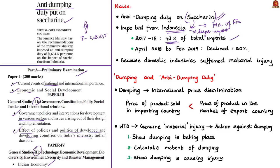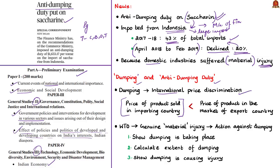This anti-dumping duty was imposed because the domestic industry producing saccharine in India suffered material injury. To understand this, let us know about dumping. Dumping is a situation of international price discrimination where the price of a product sold in the importing country is less than the price in the exporting country. In the simplest cases, one identifies dumping by comparing prices in two markets. For example, if a product X imported from country A is sold in India at Rs. 100 but its price in country A is Rs. 110, that amounts to dumping.